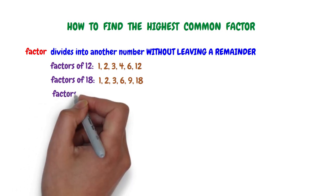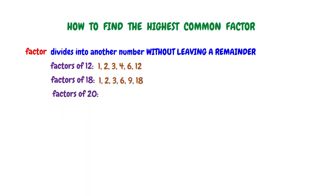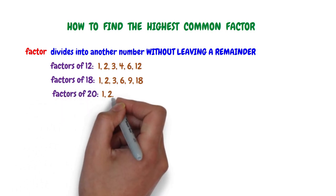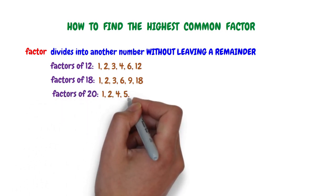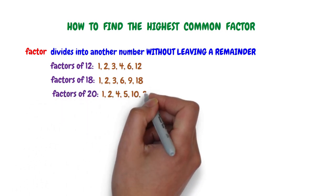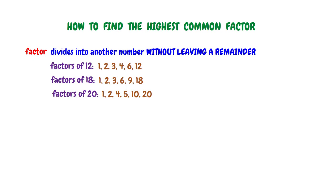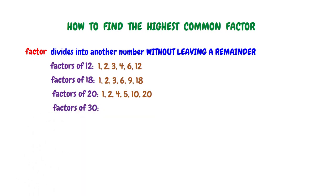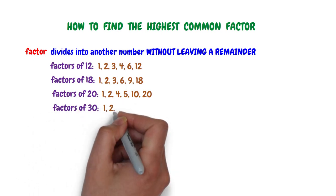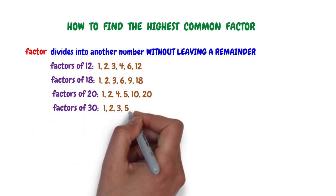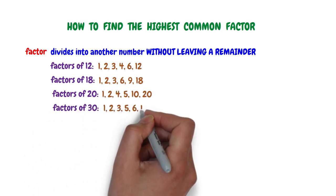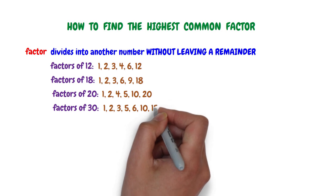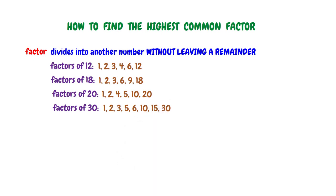Likewise, the factors of 20 are 1, 2, 4, 5, 10, and 20 itself, while the factors of 30 are 1, 2, 3, 5, 6, 10, 15, and 30 itself.